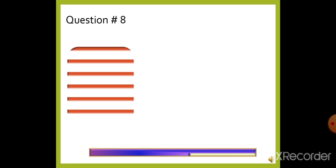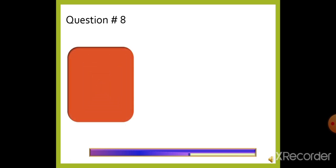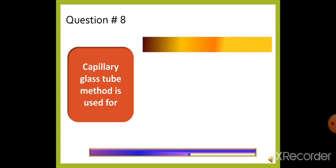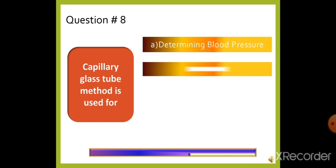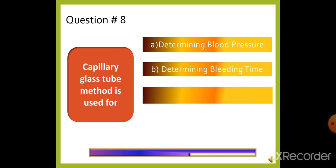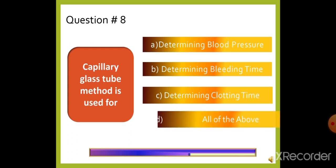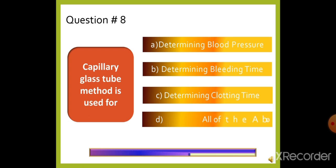Question 8: The capillary glass tube method is used for — option A: Determining blood pressure, option B: Determining bleeding time, option C: Determining clotting time, or option D: All of the above. The right answer is option C, determining clotting time.